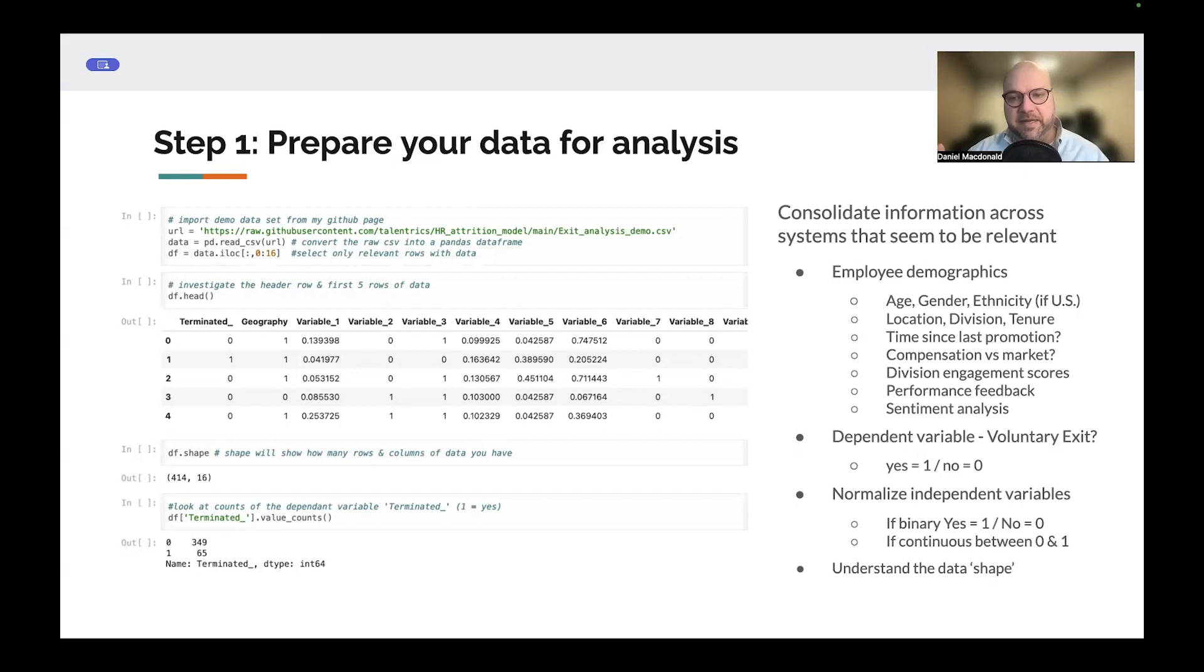So the first step, we're going to prepare our data. In this case, I brought in a whole bunch of information across different systems. But you notice here that these are all zeros and ones or something between a zero and a one. So we need to take the time before we actually put the data into the system to be thinking about normalization. If it's a yes/no question, it's a zero or one, or maybe you need multiple variables. If you have a geography variable, for example, is this a US person? Is this a Europe person? Is this a China person? That might actually be three variables where you have is it US zero one, is it Europe zero one, is it China zero one.